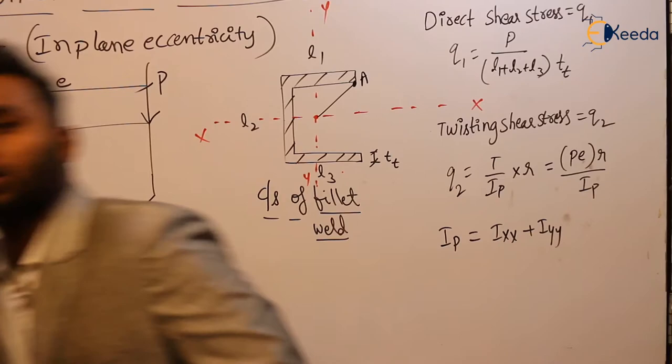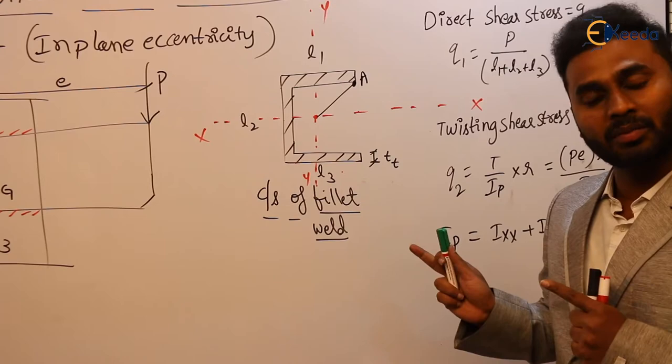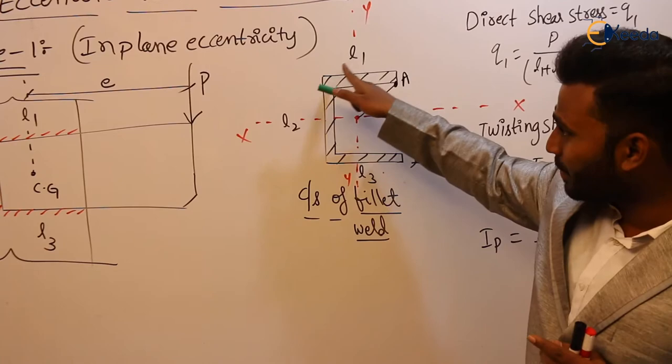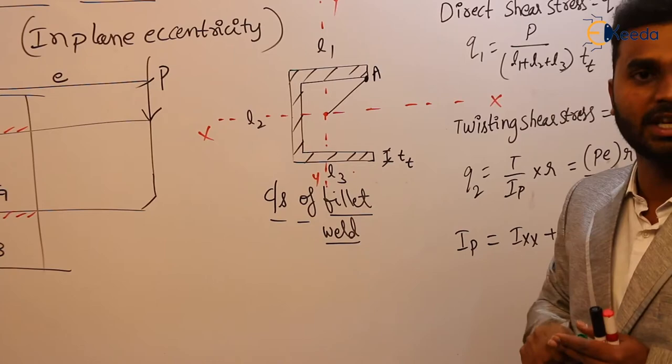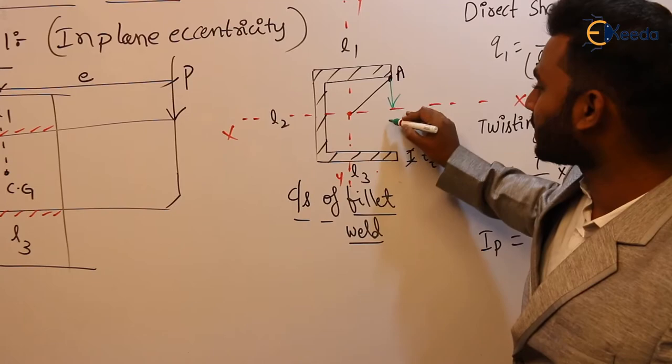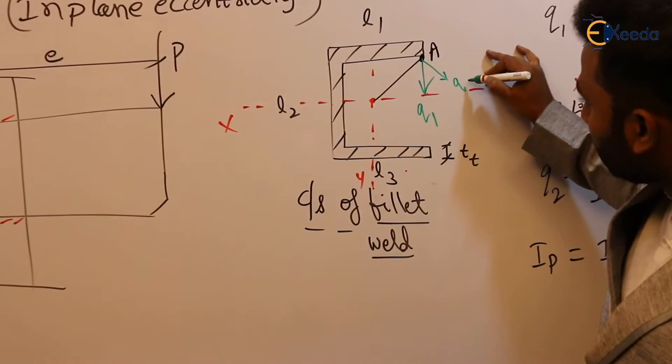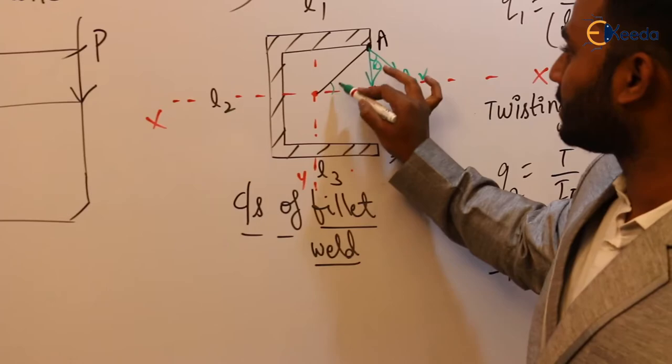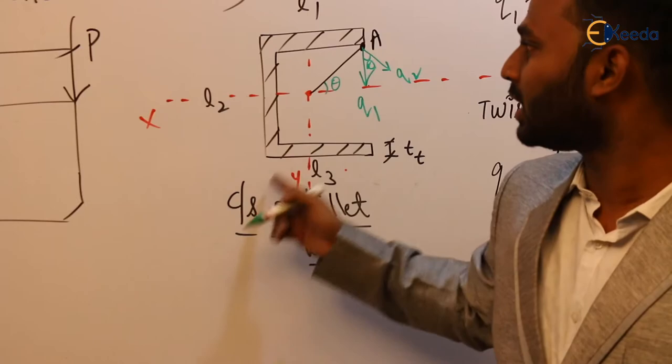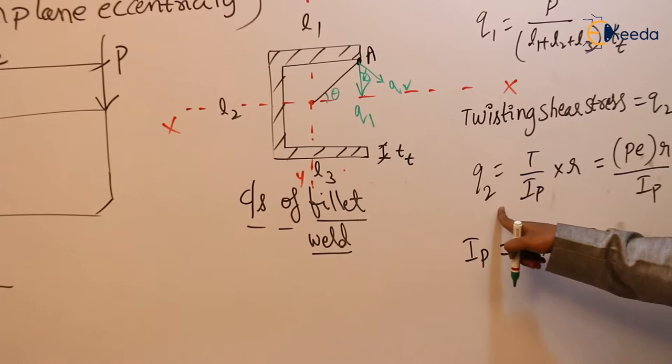Now, the important thing is the directions of q1 and q2. We consider the point farthest from the CG radially — that is point A. q1 always acts vertically downward, and q2 acts perpendicular to the radius. The angle is theta, so if that is theta, this is also theta. If we know the CG and l1, l2, l3, we can calculate theta and r.